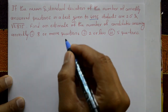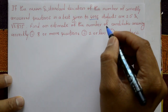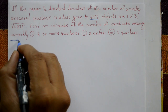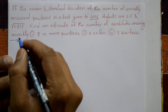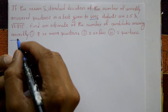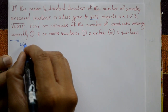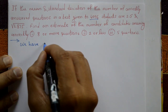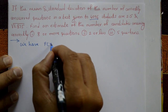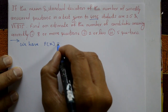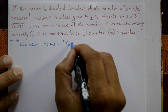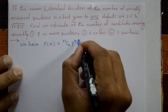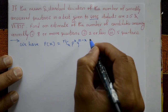Using binomial distribution. The binomial distribution formula is: P(X) = nCx × p^x × q^(n−x).